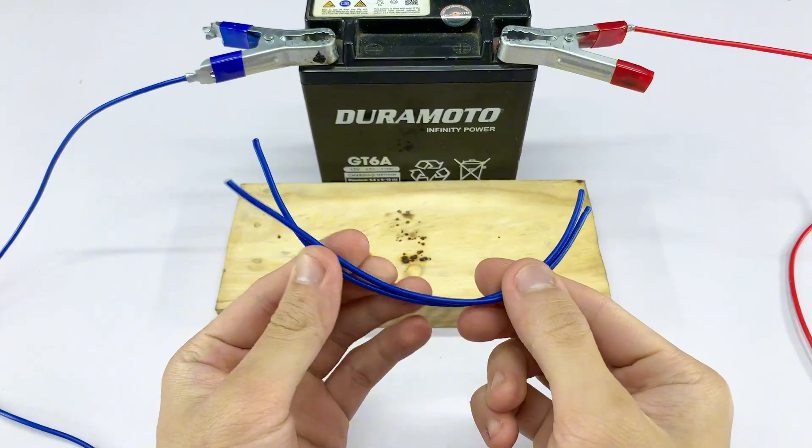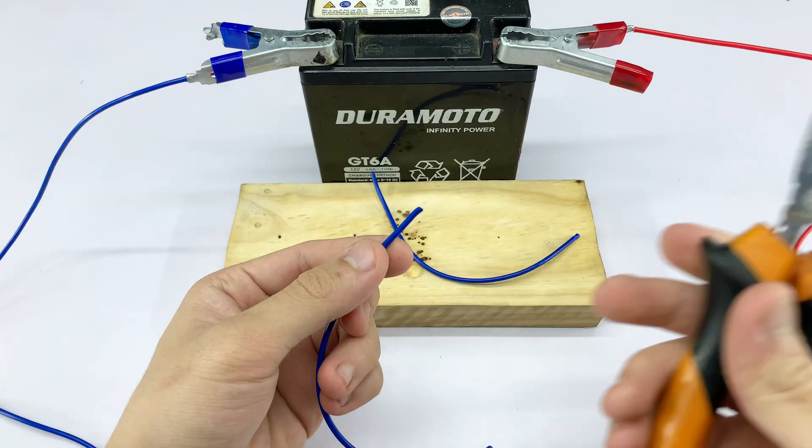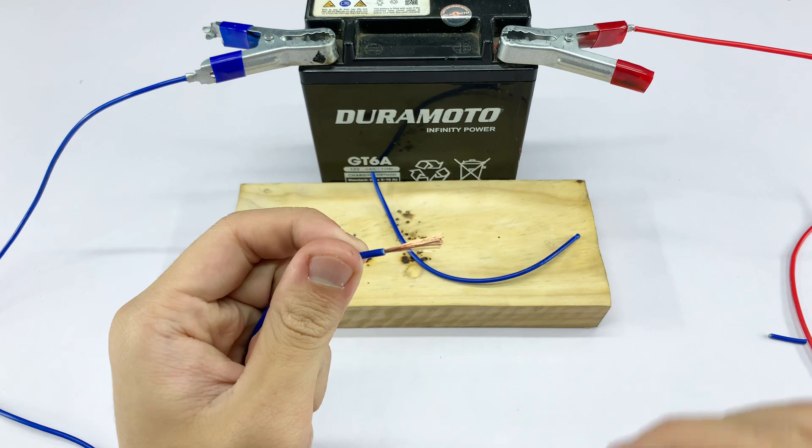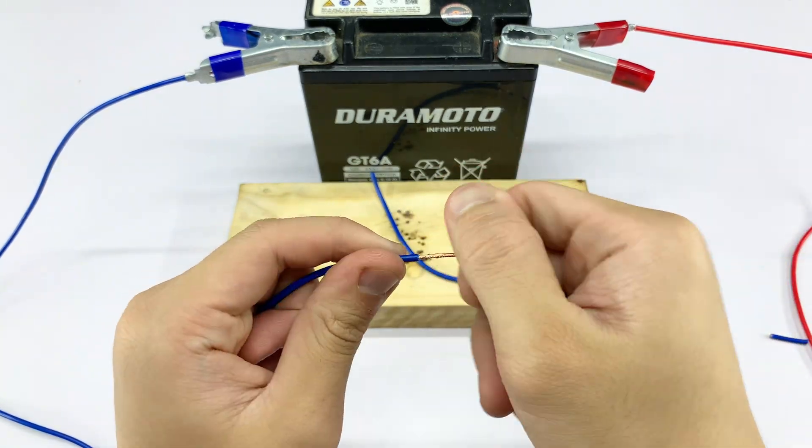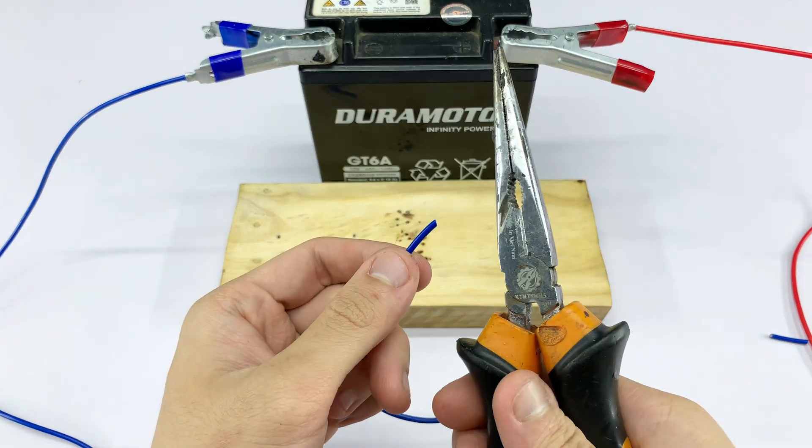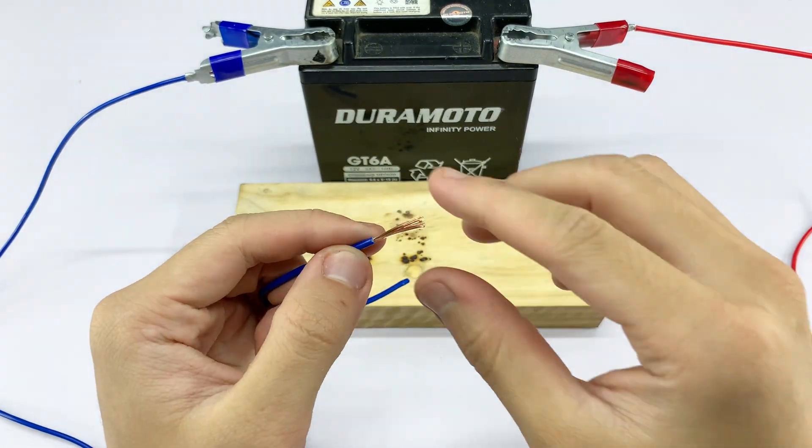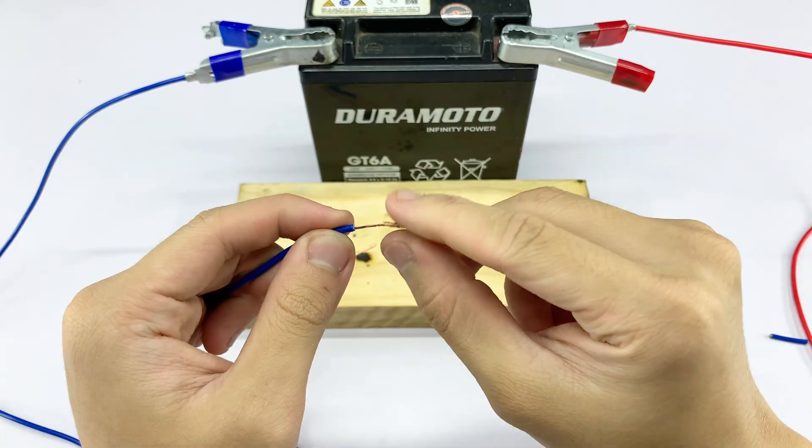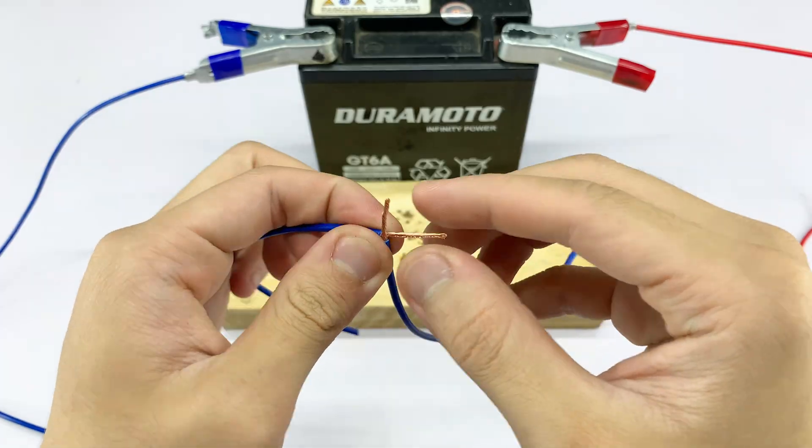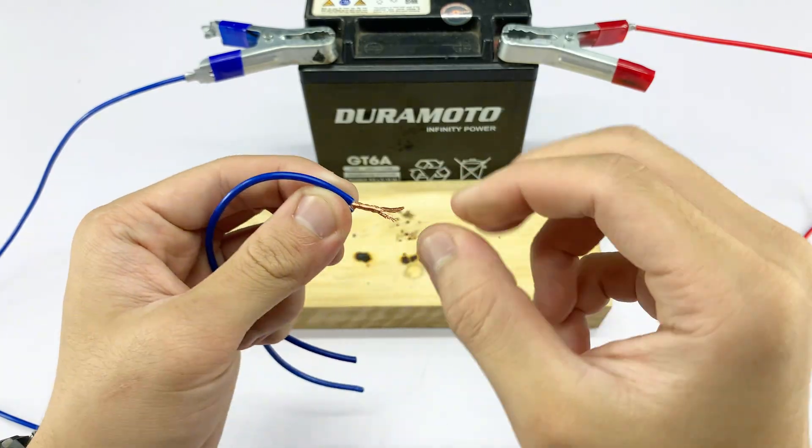Let's try another demonstration. I'm taking two lengths of blue electrical wire. I'll strip the ends of both wires, exposing the copper strands. Then I'm twisting them together, creating a point where we can observe the heating effect again.